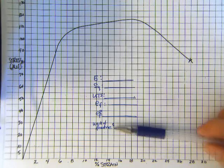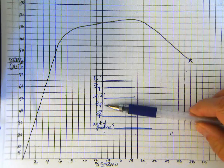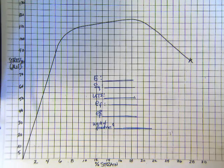To start with, these are the things we want to find: modulus, yield strength, ultimate tensile strength, strain at failure, plastic strain at failure, and the total work of fracture.